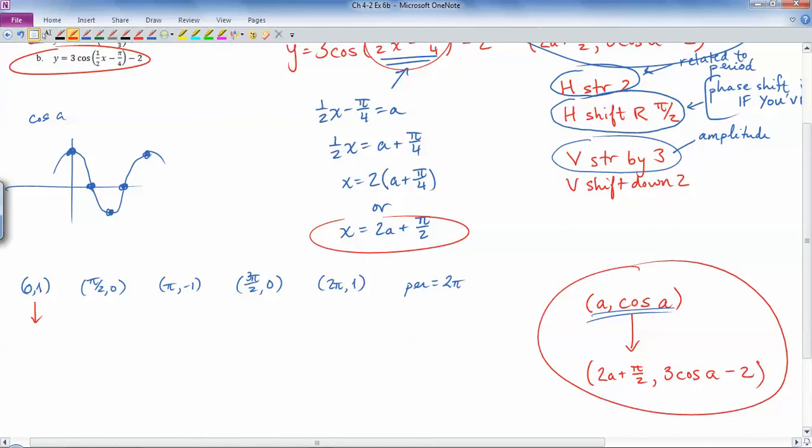Okay, so using this blueprint right here, if a is 0, then that's going to turn into 2 times 0 plus π/2, so this point now, the x value is going to be π/2. And 1 was the y value, so 1 used to be cos a, so if I plug in cos a equals 1, then I get 3 times 1 minus 2, which still happens to be 1.